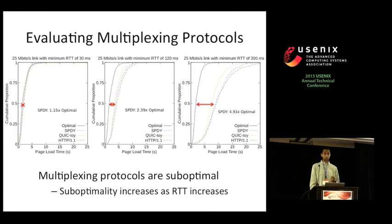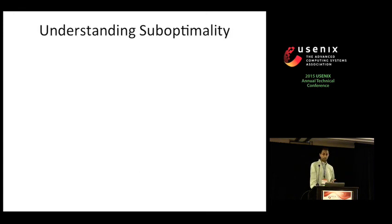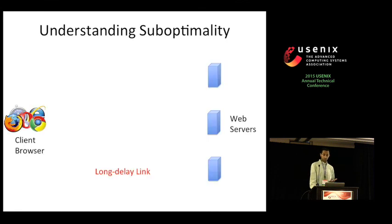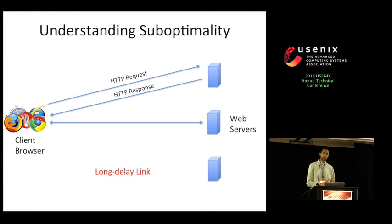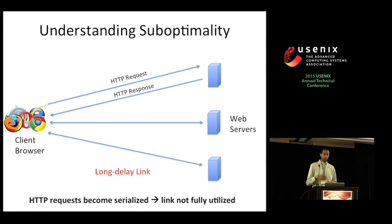To understand why, consider how a web page is loaded today. A client browser makes an initial HTTP request — usually for a top-level HTML document — and must wait an entire RTT until it gets a response. After processing that HTML, it may fetch images, JavaScript, and so on. This process of making a request, waiting, and then making subsequent requests repeatedly occurs until a web page is loaded. Essentially, HTTP requests are being serialized, leading to underutilized links.